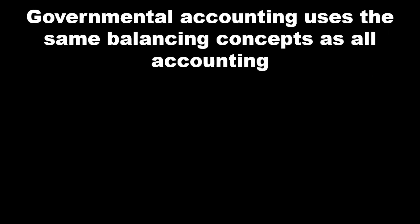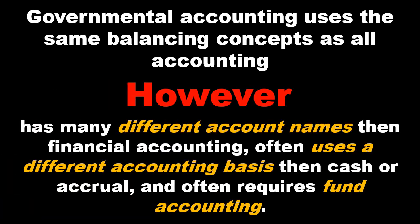Governmental accounting uses the same balancing concepts as all accounting. We're going to be using a double-entry accounting system, using debits and credits — a balancing concept where debits equal credits. However, governmental accounting will use many different account names than financial accounting. It's going to use different accounting bases, oftentimes different from the cash basis or accrual basis as we often know them in financial accounting.